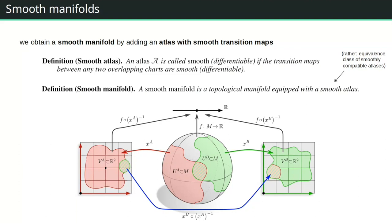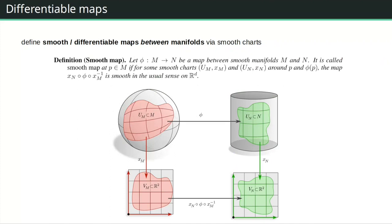A smooth structure is basically a smooth atlas defined on your manifold. An atlas is a collection of charts covering the whole manifold. It is called a smooth or differentiable atlas if all transition maps between charts are smooth or differentiable. A smooth manifold is a topological manifold with such a smooth atlas — more precisely, with a maximum smooth atlas, which is an equivalence class of smooth atlases. We now have a notion of differentiability of functions from the manifold to real numbers or vector spaces, as well as functions between two different manifolds, which are called smooth if their coordinate expressions are smooth.